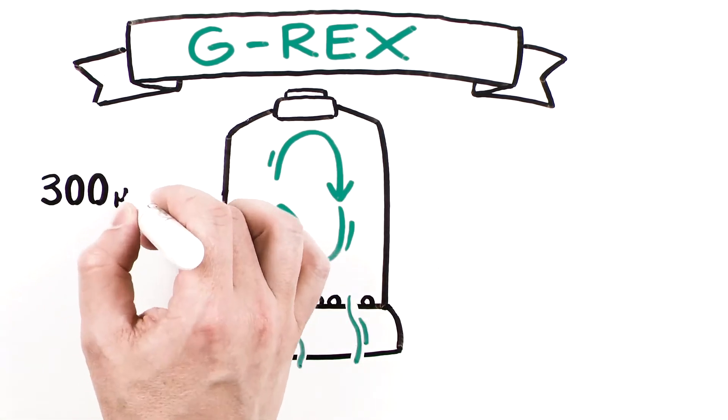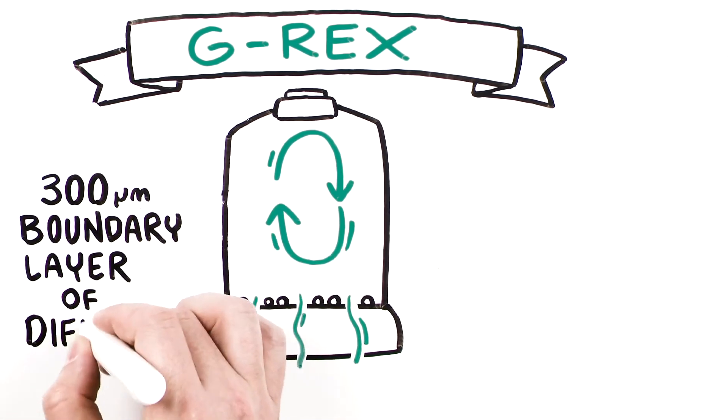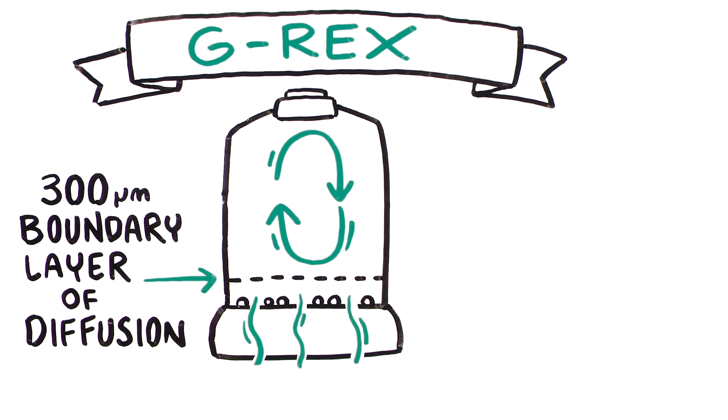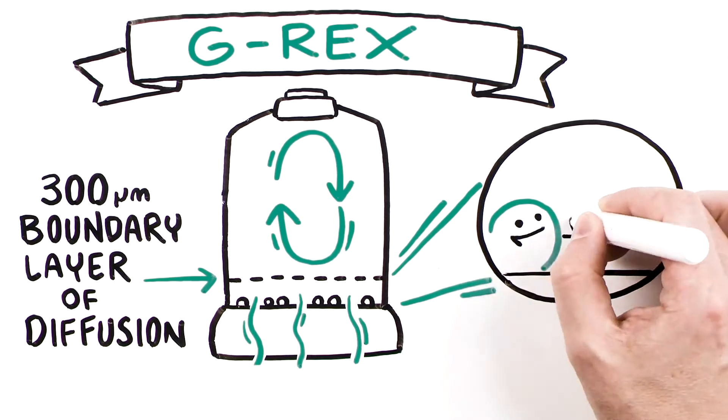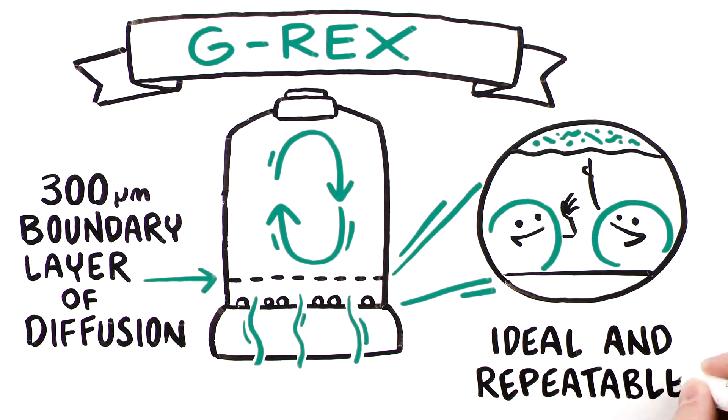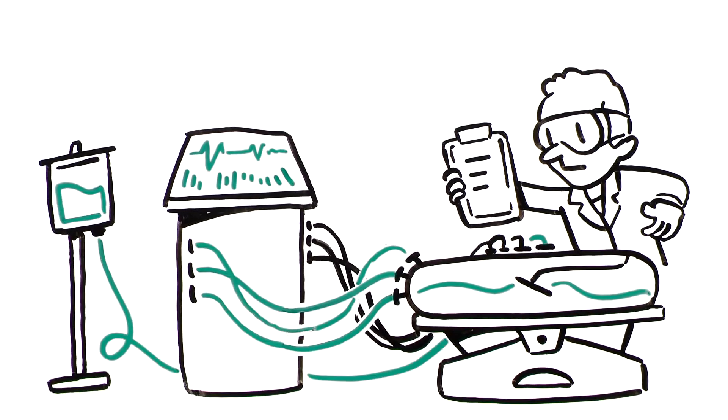Wilson-Wolf also discovered that a 300-micron boundary layer, a property of fluid dynamics, forms a quiet area inside G-REX directly above the gas-permeable membrane. Each cell resides comfortably under uniform conditions within this quiet area, providing an ideal and repeatable environment for cell-to-cell communication, high viability, and rapid cell expansion.